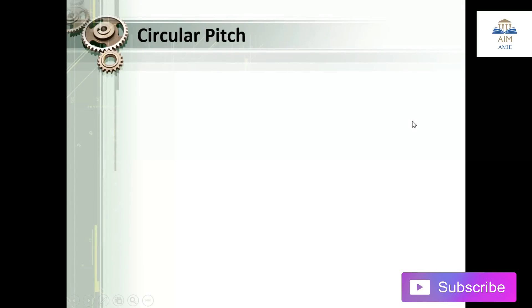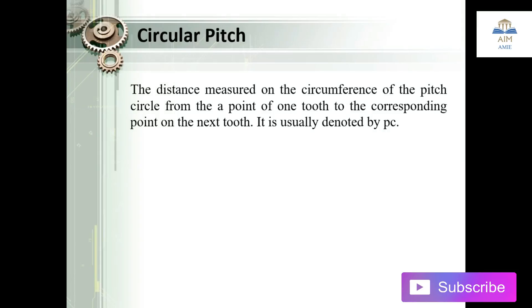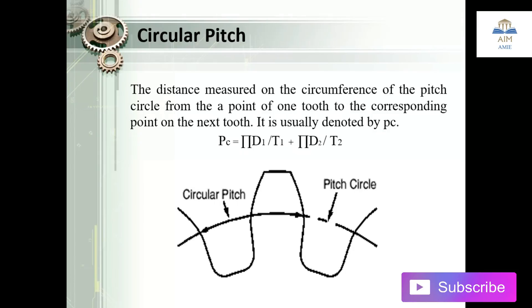The next one is the circular pitch. The circular pitch is the distance measured on the circumference of the pitch circle from a point on one tooth to the corresponding point on the next tooth. From this image you can see clearly: the circular pitch is the distance between a point on one tooth and the corresponding point on the next tooth, measured along the pitch circle.